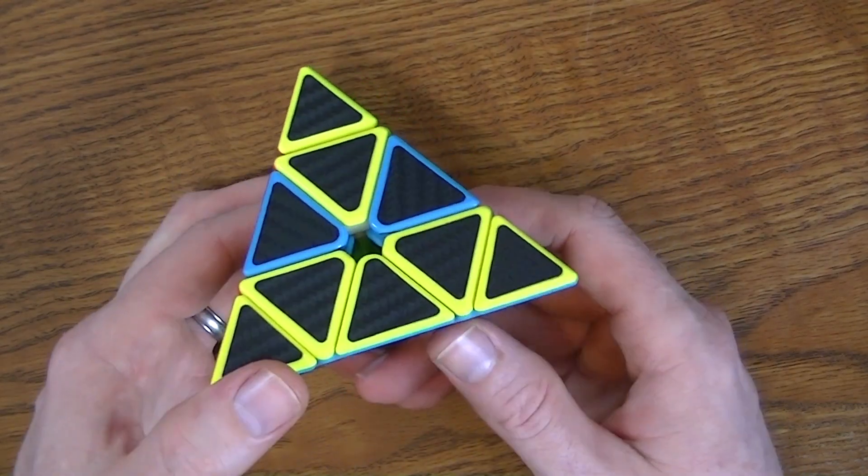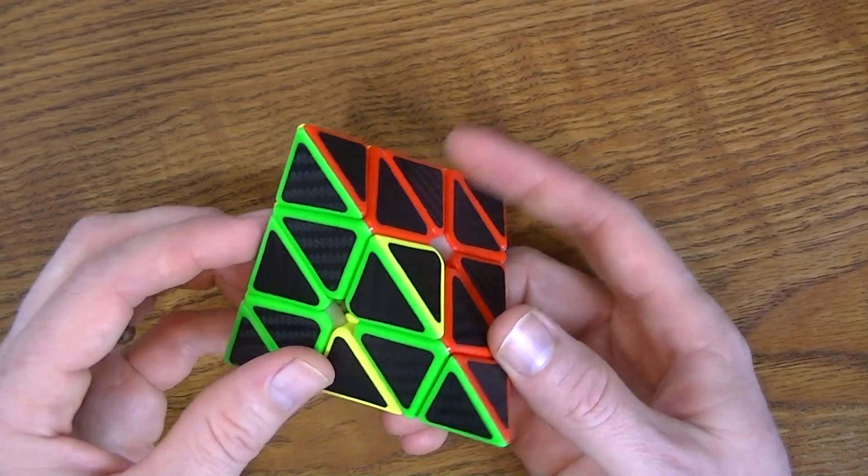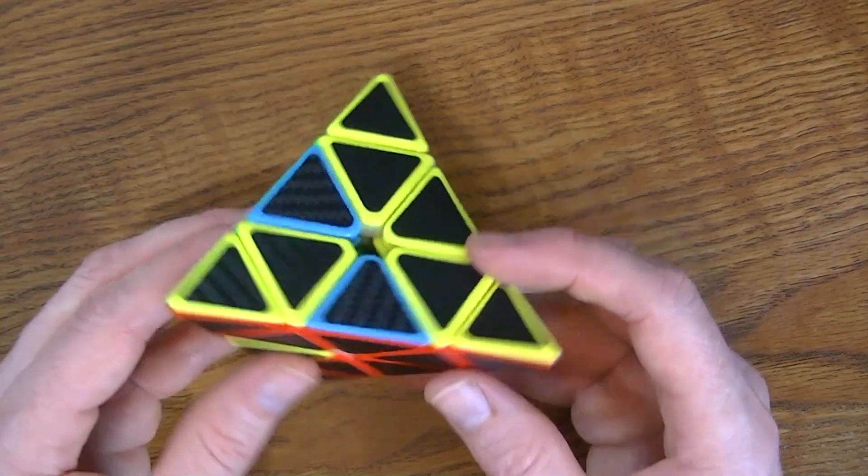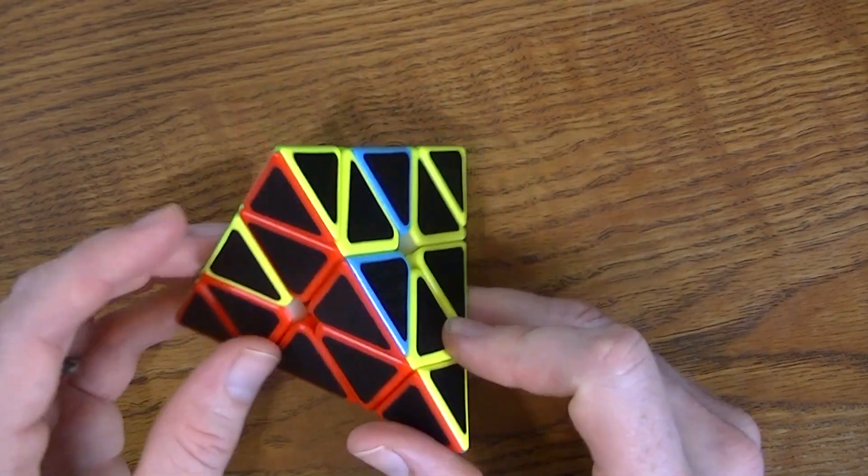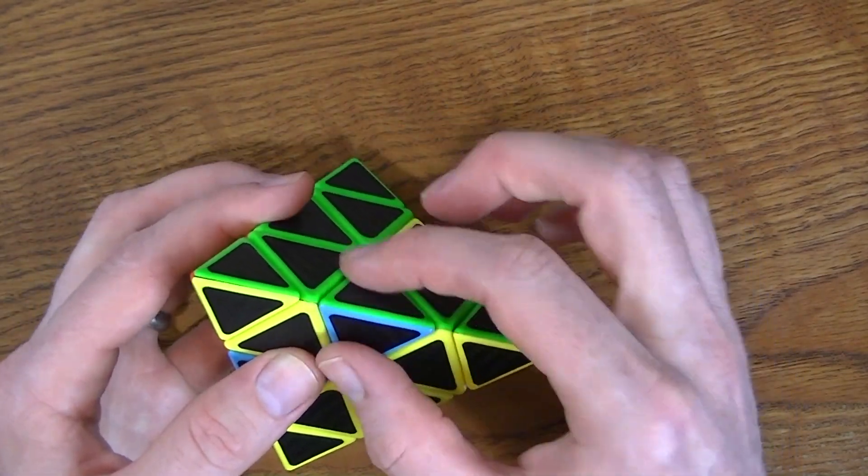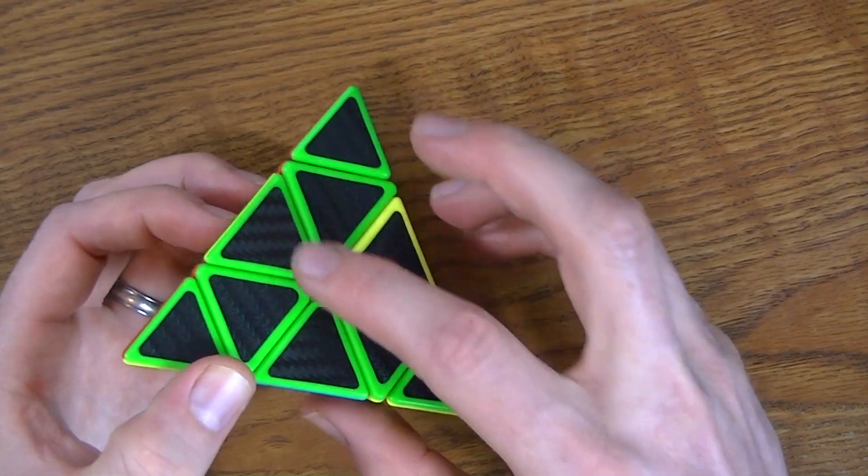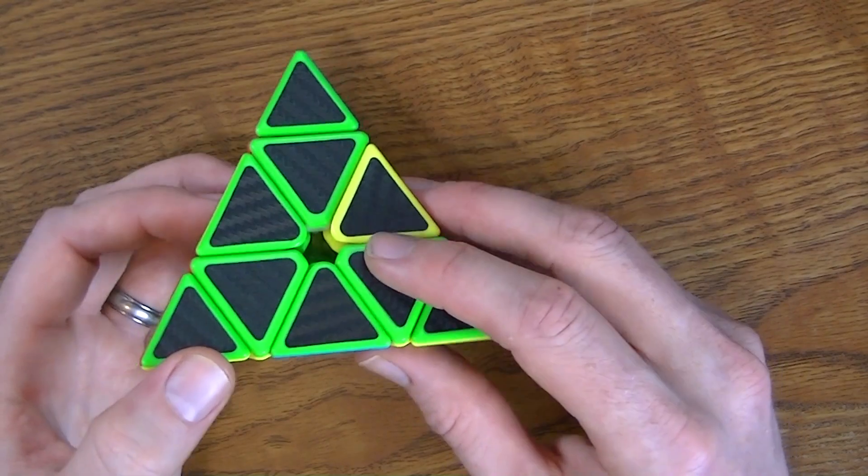Let me show you how to solve the yellow face with only three turns. First off, I want to find all the yellow pieces. This one here is a yellow and green piece. That means it goes right here. I'm going to actually bring this one from there to there so I can help solve the yellow side.